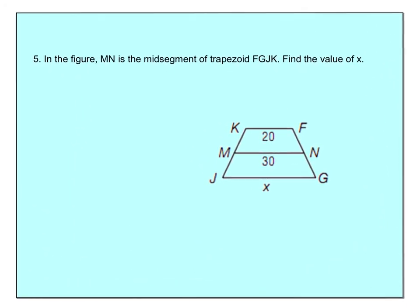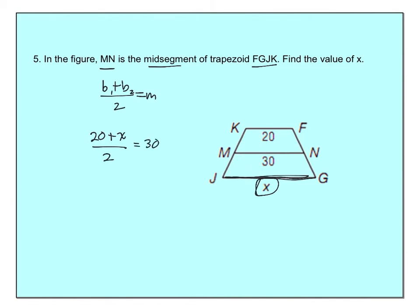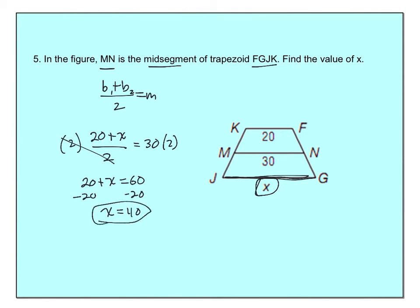MN is the mid-segment of trapezoid FGJK. Find X, where X is the bottom base. So base plus base divided by 2 equals the mid-segment: (20 + X) / 2 = 30. Multiply both sides by 2: 20 + X = 60. So X = 40.